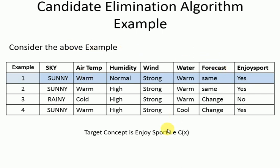Consider an example with six attributes. The target concept is 'enjoy sports' — yes or no. The six attributes are sunny, warm, normal, strong, warm, and same. There are four instances total, each with attribute values. The classification is positive if yes, and negative if no.